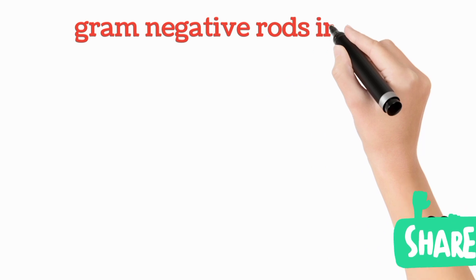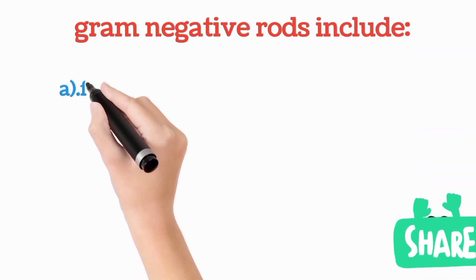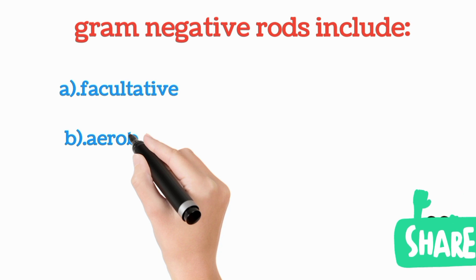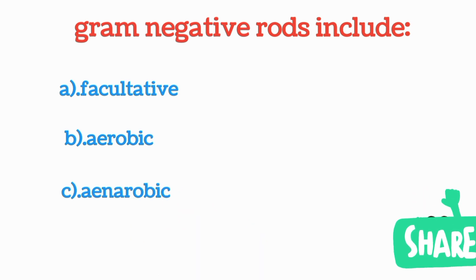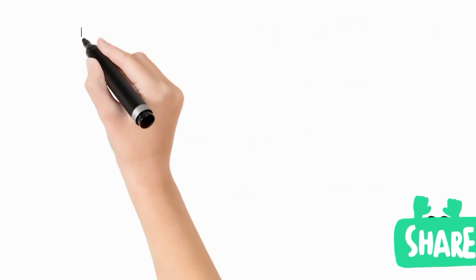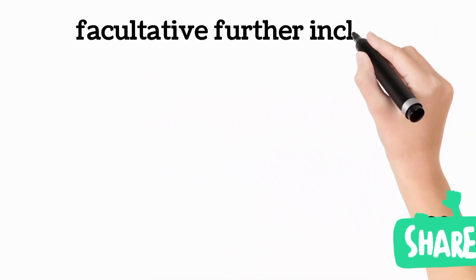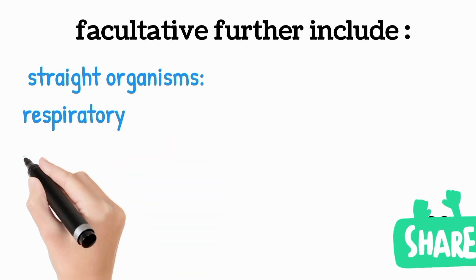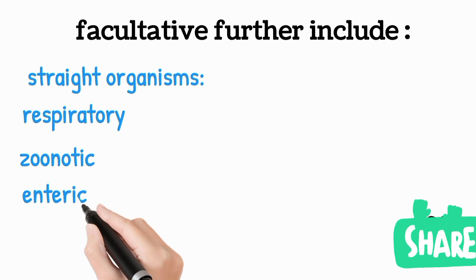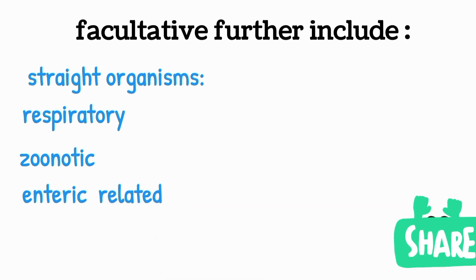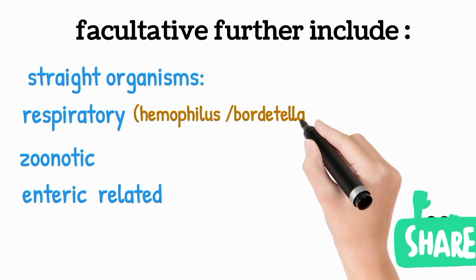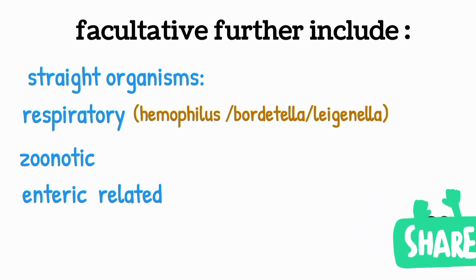Gram negative rods include facultative, aerobic, and anaerobic bacteria. Aerobic bacteria require oxygen, anaerobic do not, and facultative can survive in both environments. Facultative straight organisms include respiratory tract organisms such as Haemophilus species, Bordetella, and Legionella — all of which cause respiratory tract infections.